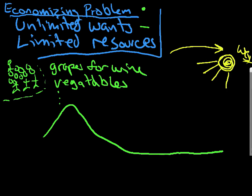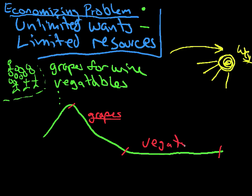What are they going to do when they have to make this choice? Their choice is: where are we going to grow vegetables, where are we going to grow grapes, and how many people are we going to put on there to do it? When they look at this piece of land as their resource, they have to make a decision. What's interesting about the world is not all pieces of resources are perfectly good at doing everything.